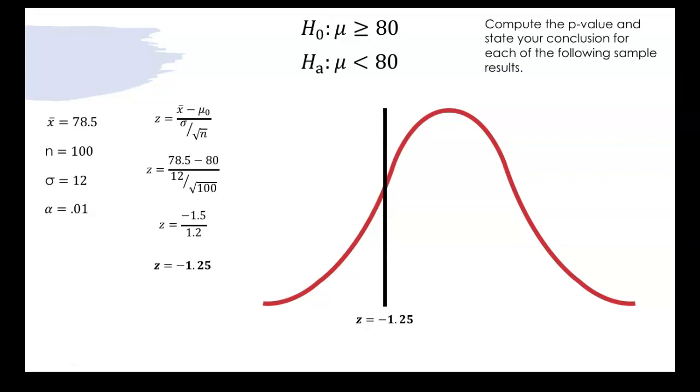Now we need to know is this a right tailed test a left tailed test so we look up at the sign in our alternative hypothesis and we see that it's pointed to the left so it's a left tailed test.